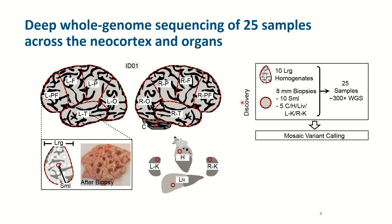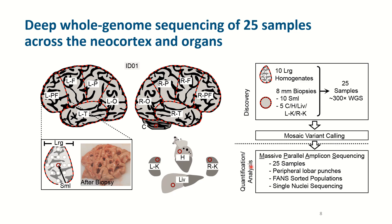As a discovery phase, we carried out 300x whole genome sequencing for each of the homogenized brain lobes and the central punch from each lobe. We used state-of-the-art bioinformatics and genetic variant-calling pipelines and identified hundreds of naturally occurring somatic mutations from each of the donors. In the quantification and analysis space, we genotyped the multi-dimensional samples with a massive parallel amplicon sequencing method.